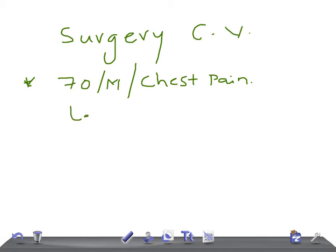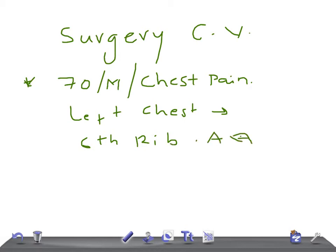On examination, there is severe pain over the sixth rib on the left side, at the level of the anterior axillary line. A chest X-ray was taken and confirms the presence of a rib fracture with no other abnormal findings.